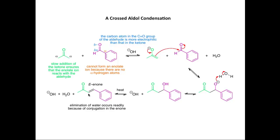In this particular case, not only is the C=C double bond stabilized by conjugation with the ketone, but also by the benzene ring. You'll also notice that the E-isomer of the enone is formed selectively because that isomer is more stable than the Z-isomer.